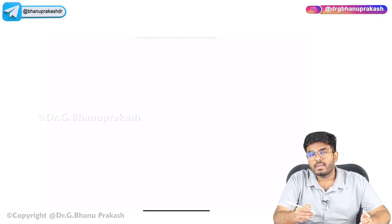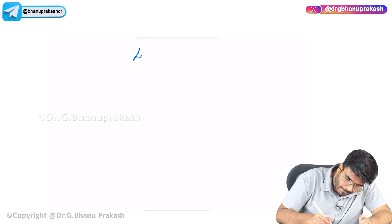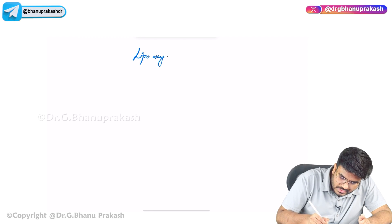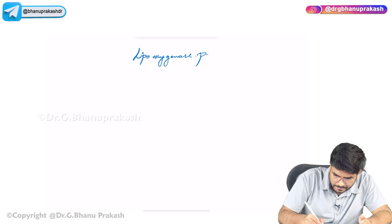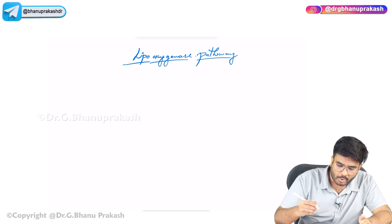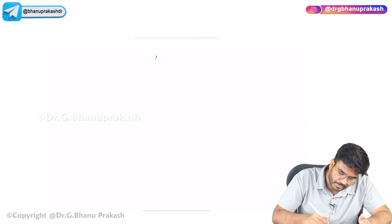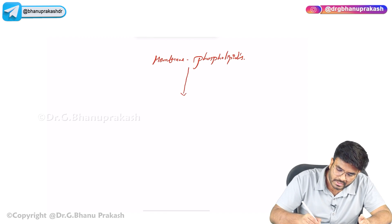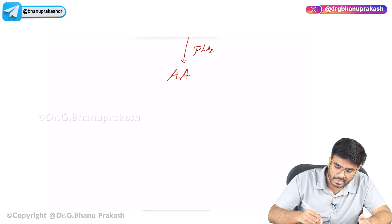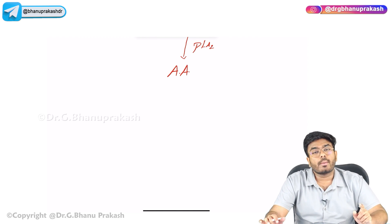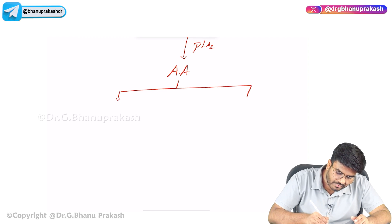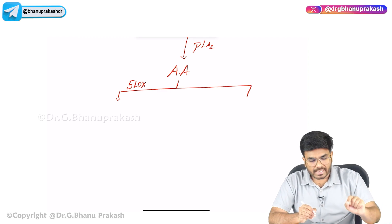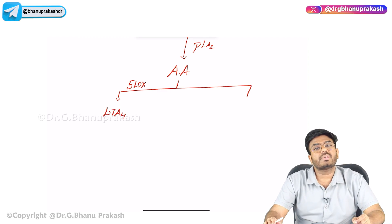After the prostaglandin pathway, let's discuss the leukotriene pathway, or the lipoxygenase pathway. Again, membrane phospholipids, when acted upon by phospholipase A2, produce arachidonic acid. Now this arachidonic acid is acted upon by a different enzyme — 5-lipoxygenase. When acted upon by 5-lipoxygenase, leukotriene A4 is going to be produced.